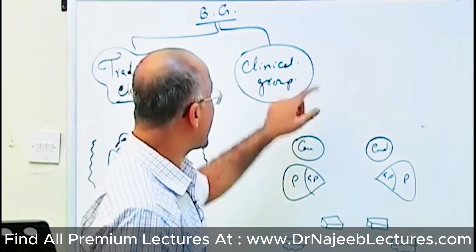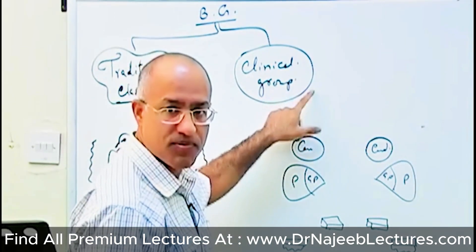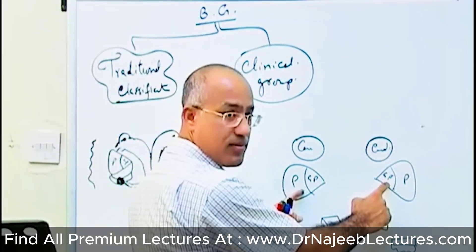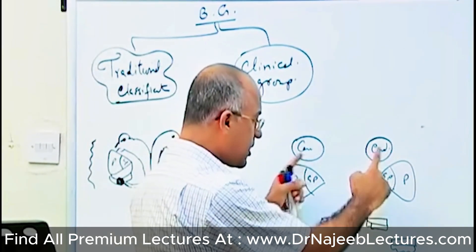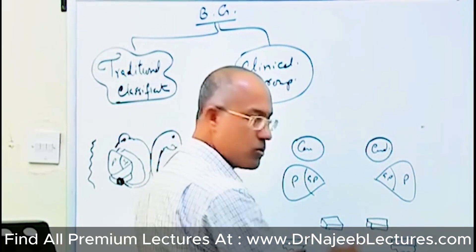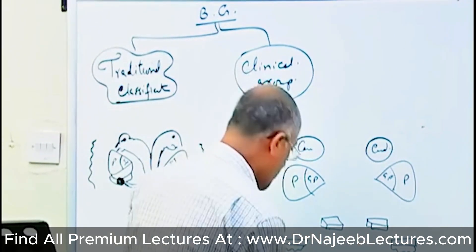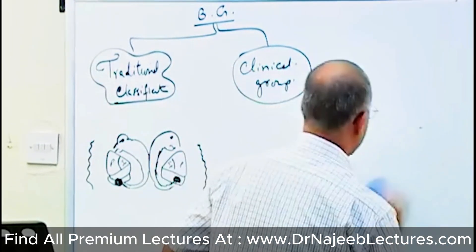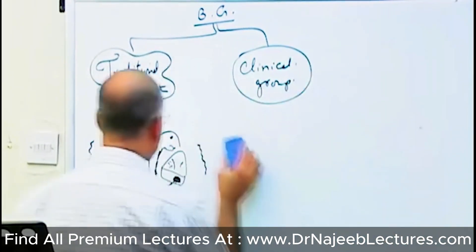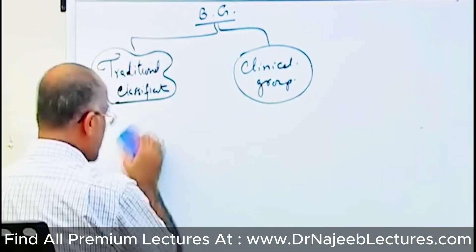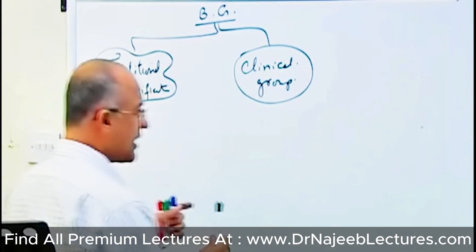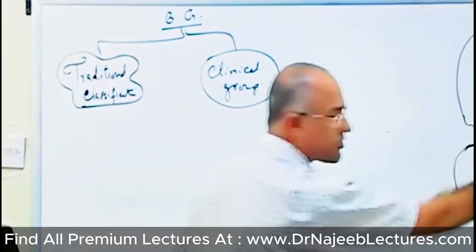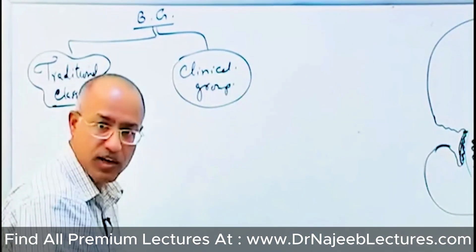So clinically, what are the basal ganglia? Lentiform nucleus, caudate nucleus, and the two associated structures — subthalamic nucleus and substantia nigra. Going forward, I will draw only the left side of the structures.